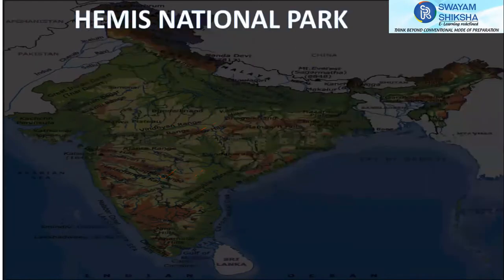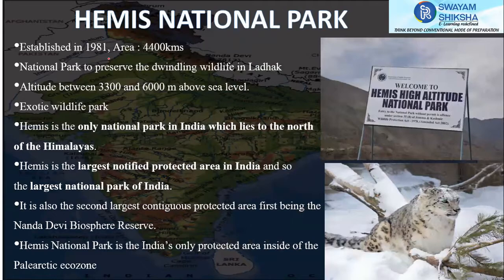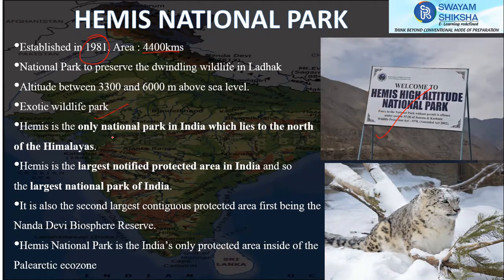Hemis National Park was established in 1981 with an area of 4,400 square kilometers. It is a high-altitude national park with exotic wildlife. Hemis is the only national park in India which lies to the north of the Himalayas, and it is the largest notified protected area in India.